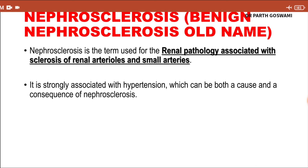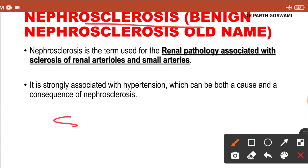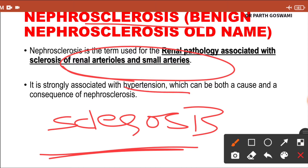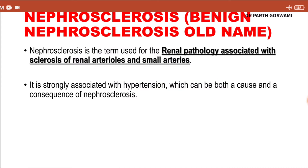The term nephrosclerosis is used for the renal pathology associated with sclerosis of renal arterial and small arteries. The name itself suggests there is sclerosis of blood vessels, particularly involving the small arteries of the kidney, and it is strongly associated with hypertension. Importantly, nephrosclerosis can also lead to hypertension as a complication — so hypertension is both an etiology and a complication of nephrosclerosis.